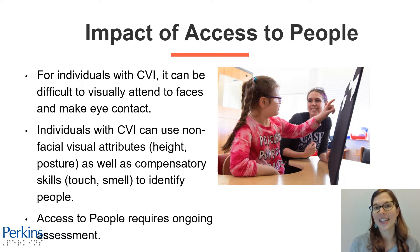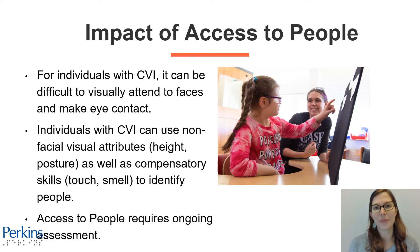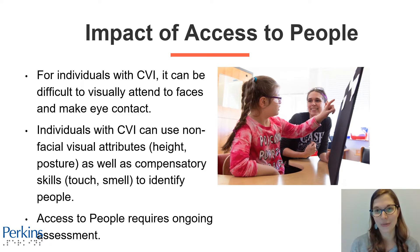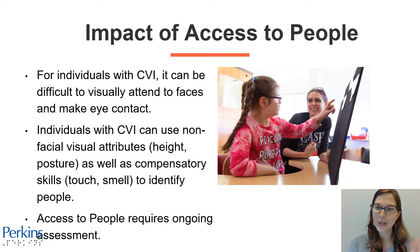Access to people requires ongoing assessment. We know that for individuals with CVI, their ability to make and maintain eye contact and recognize those around them can change over time, so you want to continue to evaluate this. In this photograph, there's a student who is pointing to something on a black slant board. She's doing some work in her classroom. Her teacher is sitting to her left and the student is turned a bit towards her teacher with her face. It's difficult to tell which is really making eye contact.